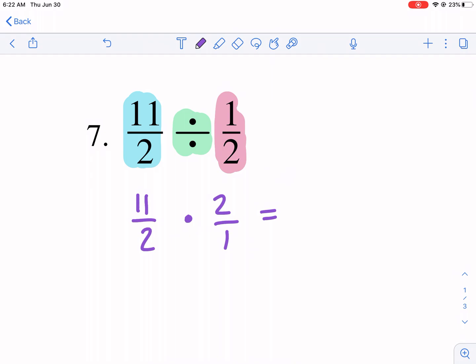Now we have 11 times two, which is 22, over two times one, which is two.